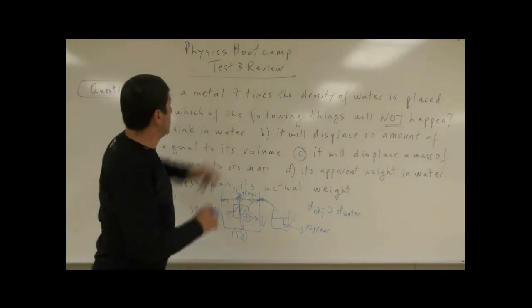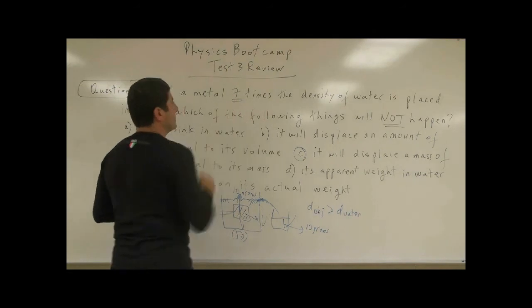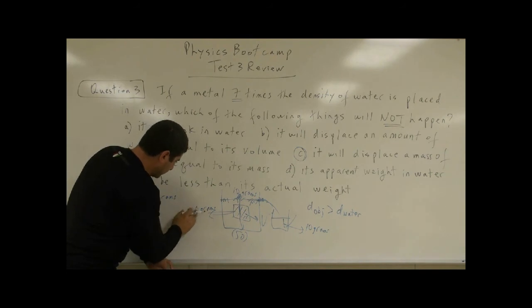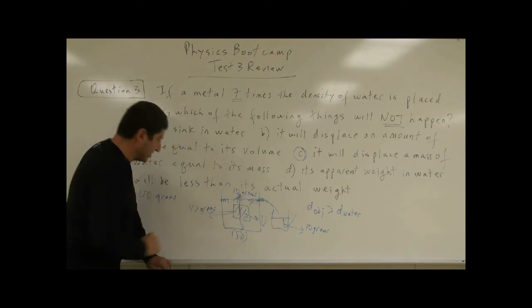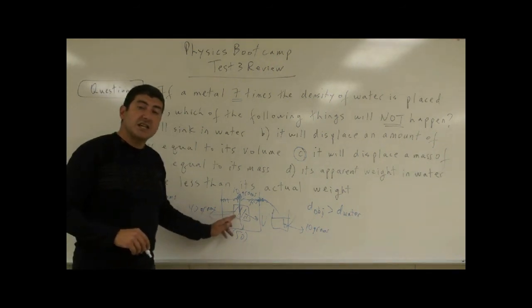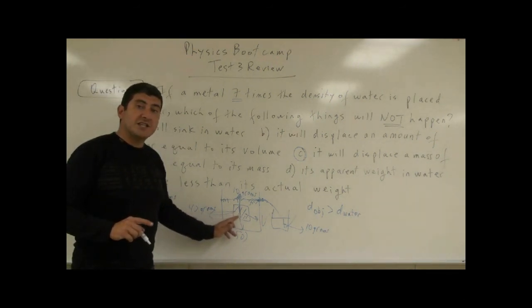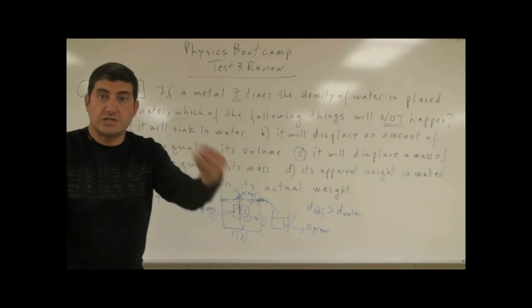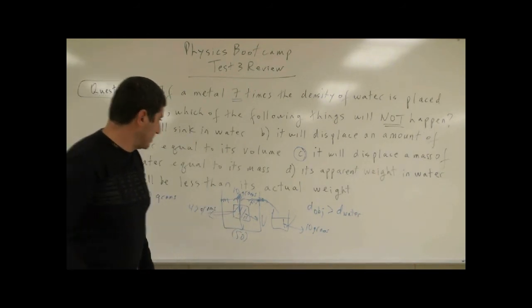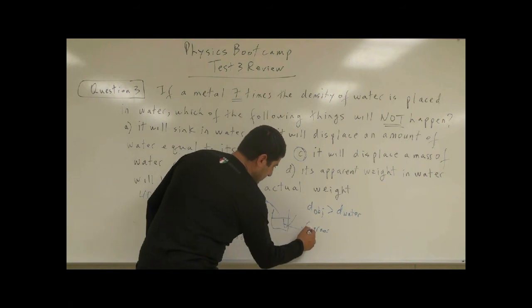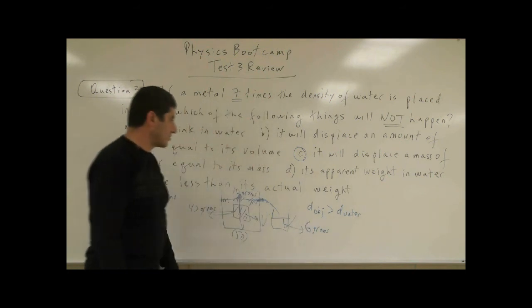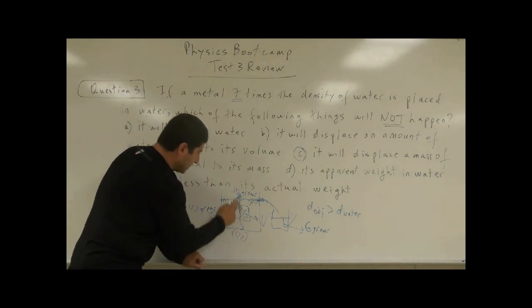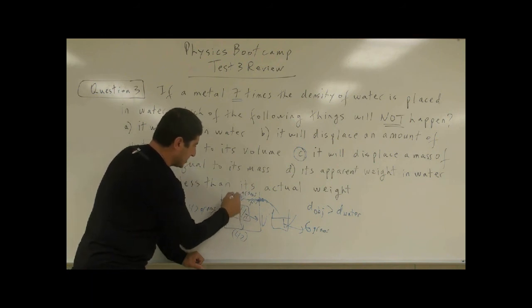As a matter of fact, in this case, what's going to happen? Well, since it's seven times the density of water, let's say its mass was, just for the sake of argument, 42 grams. Since it is seven times denser than water, an equal volume of water is going to have how much mass? 42 divided by 7. So it's going to have a mass of 6 grams. Exactly 6 grams.